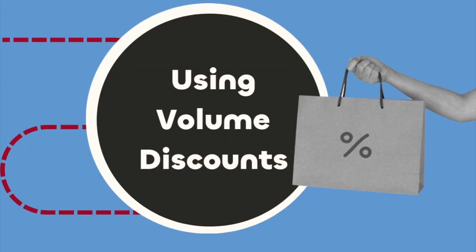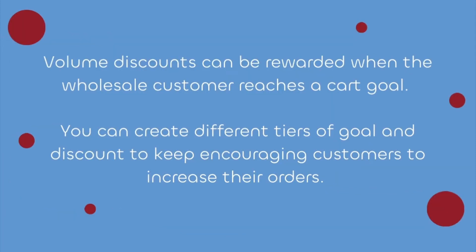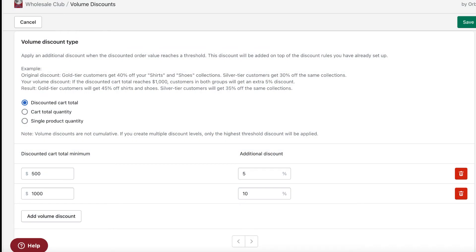Another option for encouraging bulk orders is offering an additional discount when their cart reaches a goal. Using the volume discounts feature, available on the professional Wholesale Club plan, you can do just that. Volume discounts can be rewarded when the wholesale customer reaches a cart goal, and you can create different tiers to keep encouraging customers to increase their orders. For example, an extra 5% off cart totals over $500 and an extra 10% off cart totals over $1,000.